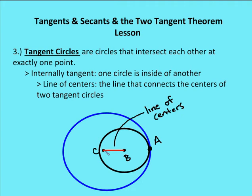The line of centers is the line or segment between the centers of the circles. For circle B and circle C, if I draw a line between their centers, that's called the line or segment of centers.